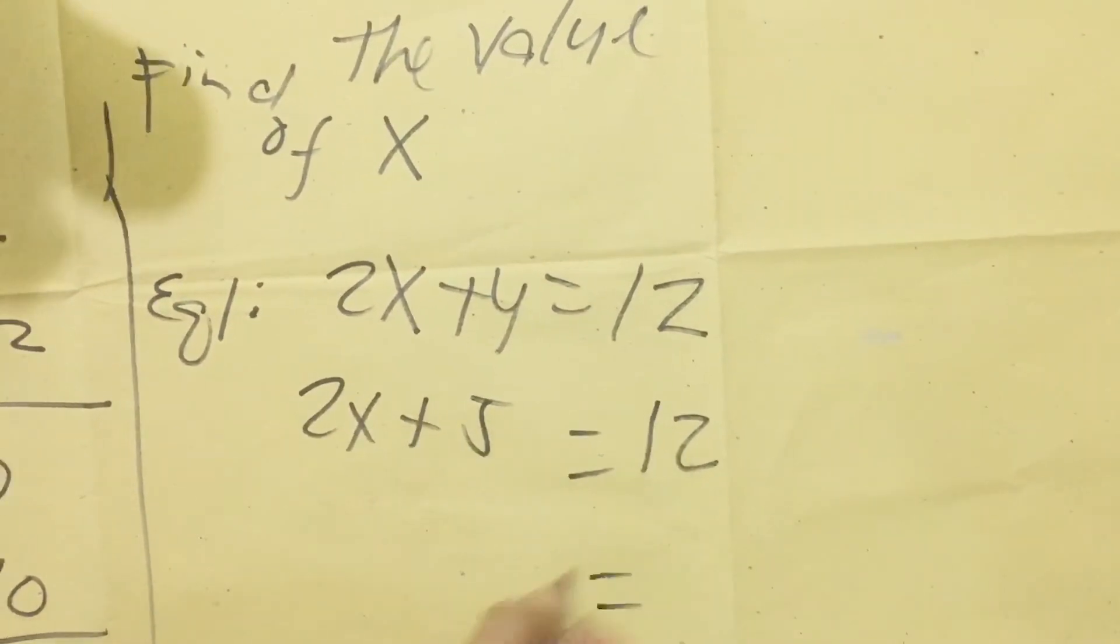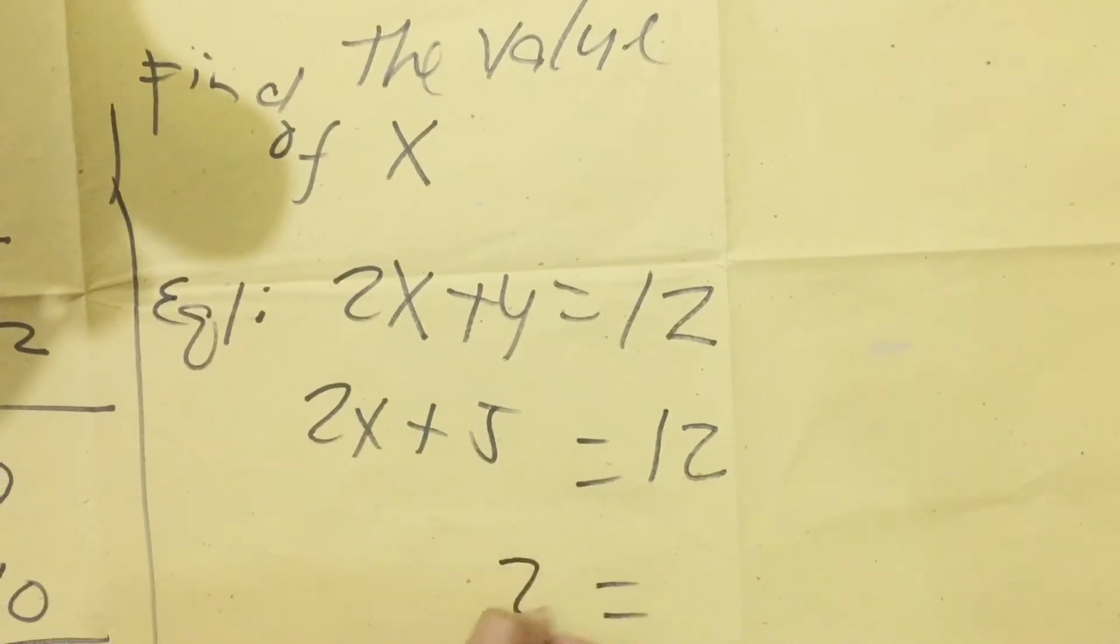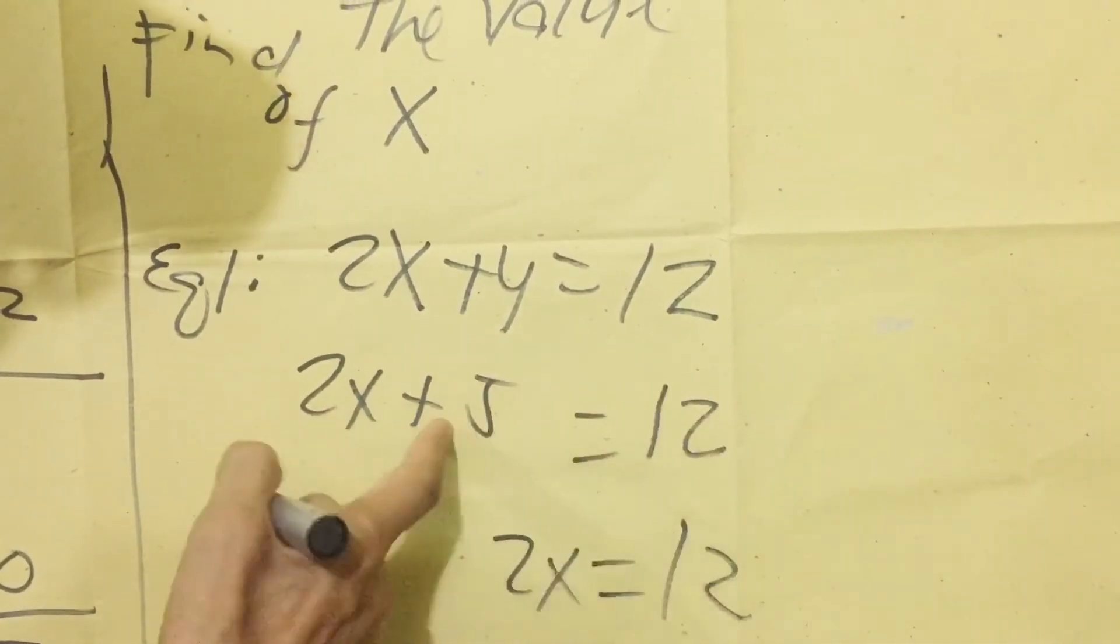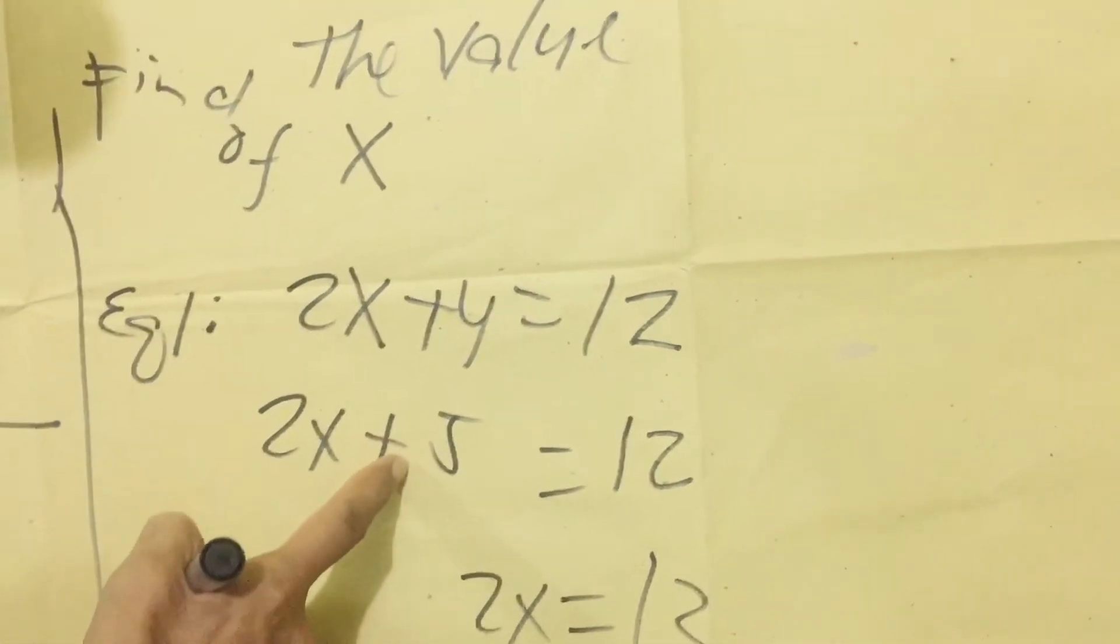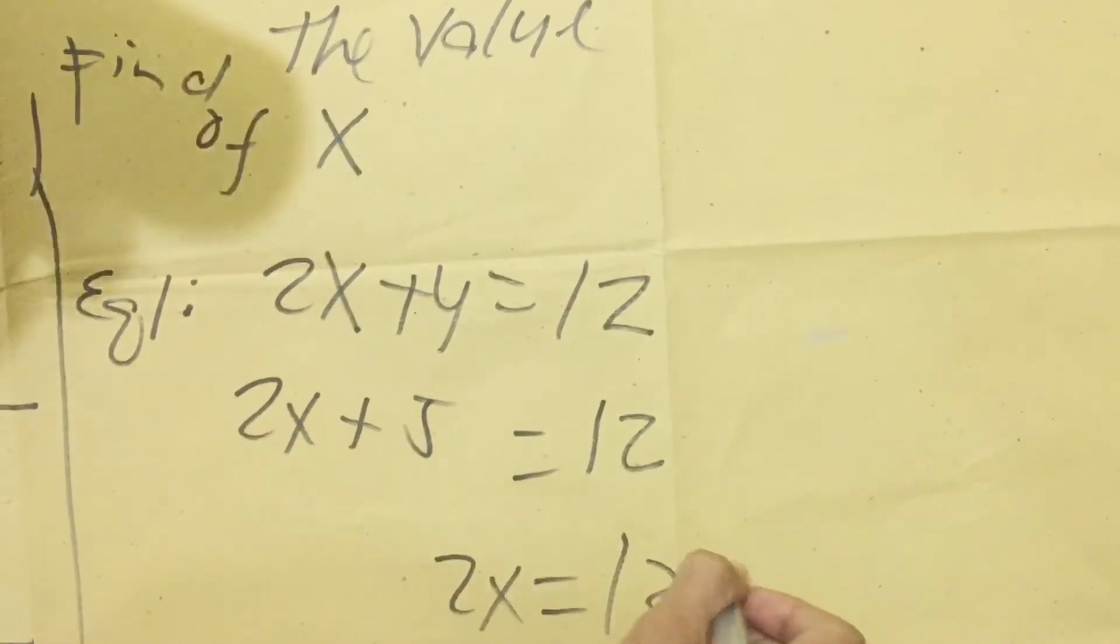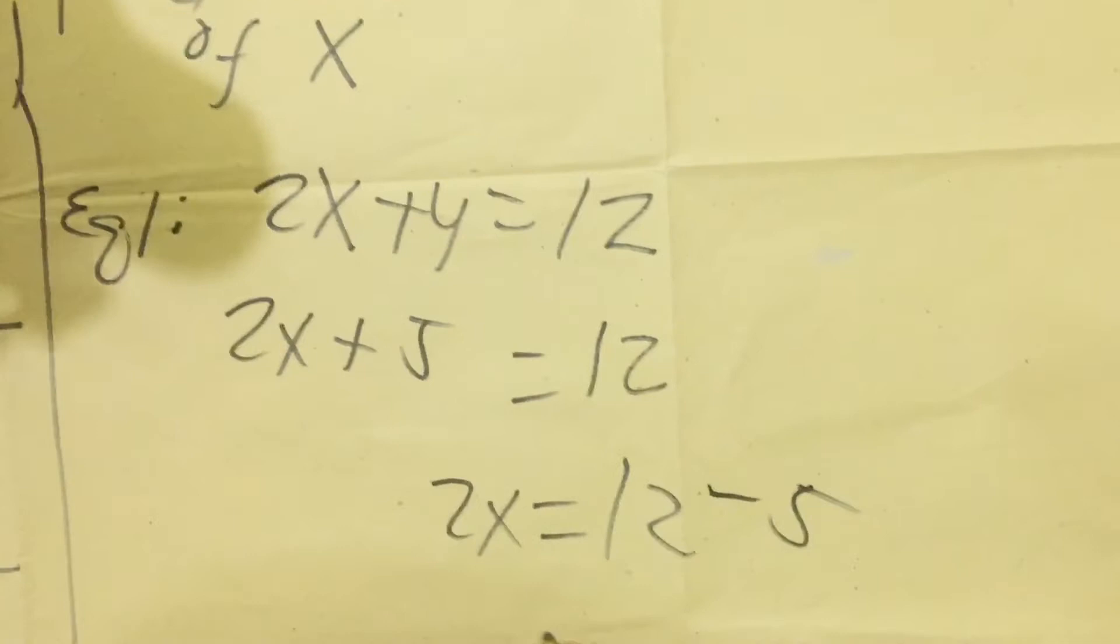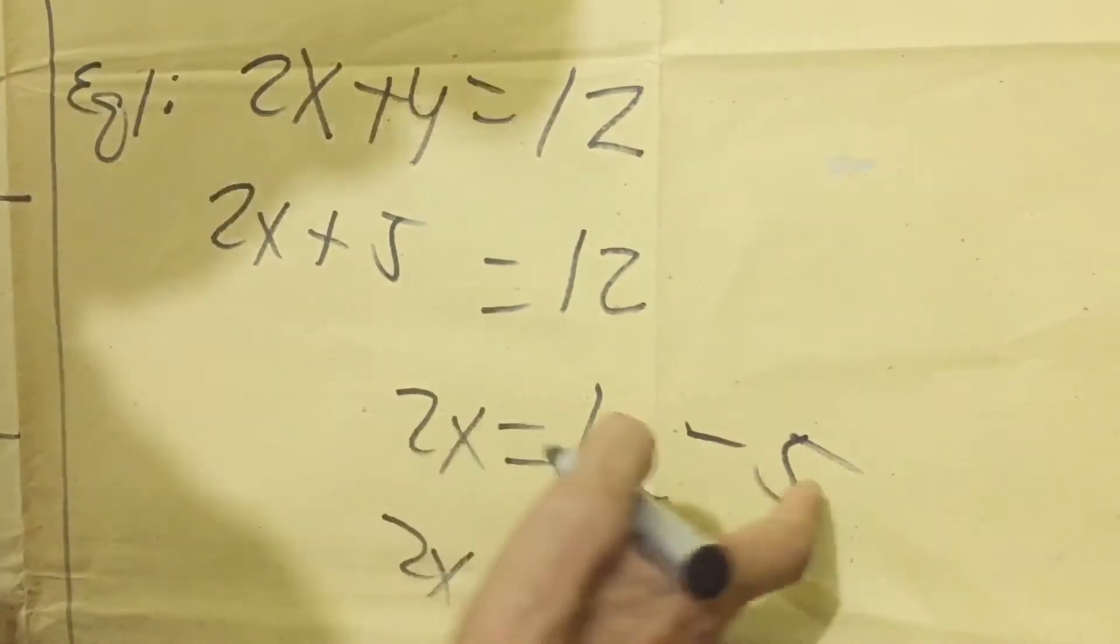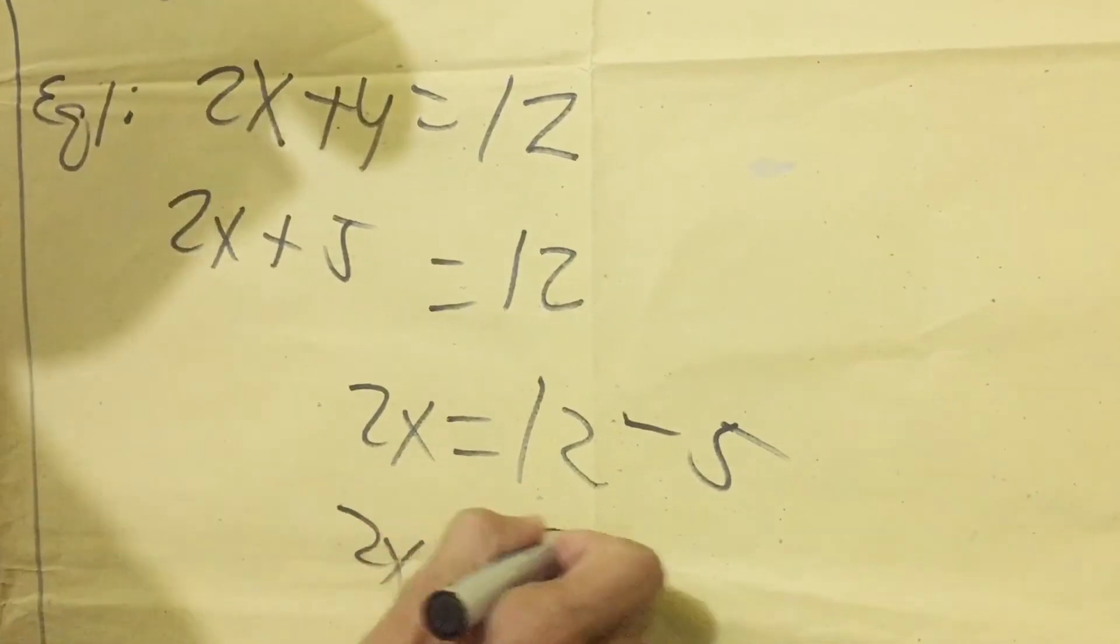Then the next is transposition. Copy 2x here. Copy 12. Then transpose. When you transpose, don't forget the sign of positive 5. It becomes now negative 5 when you transpose. Then 2x equals 7.